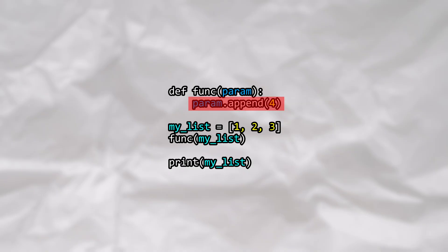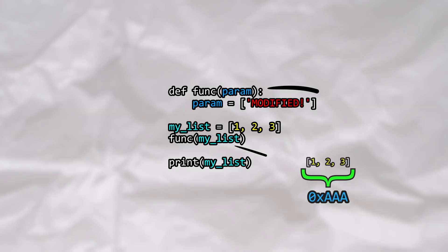Rather than modifying the existing list, we're going to completely reassign the parameter to an entirely new list. Keep in mind that the reference itself was passed in by value. This means that we handed the function a copy of the reference. To visualize this,